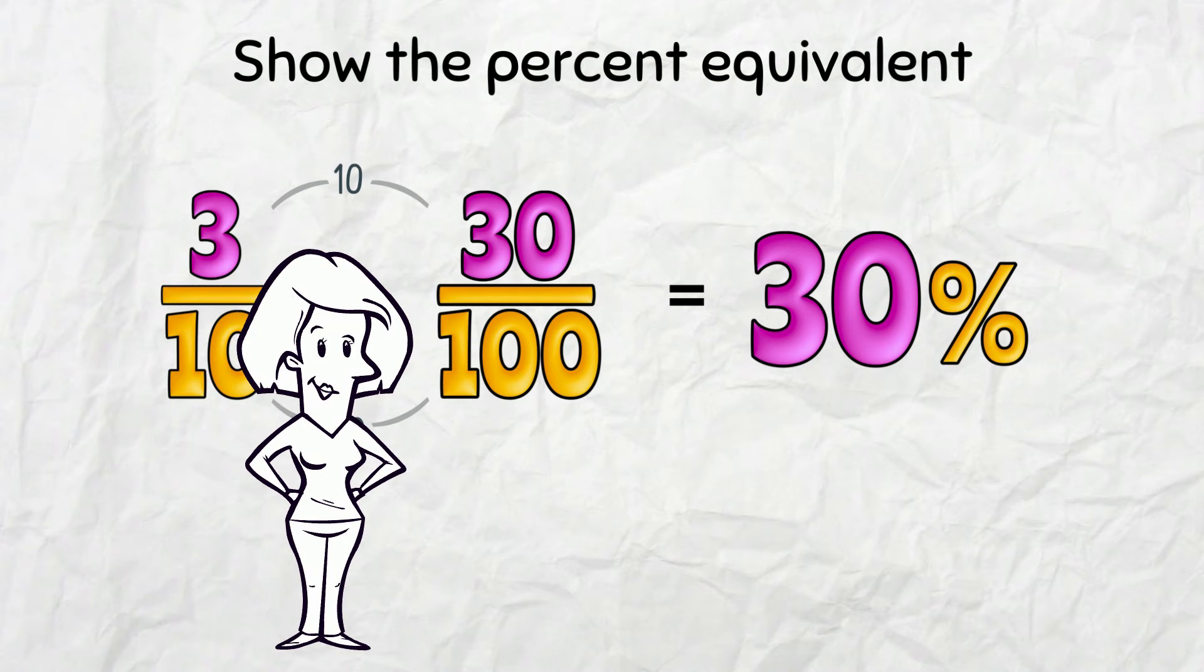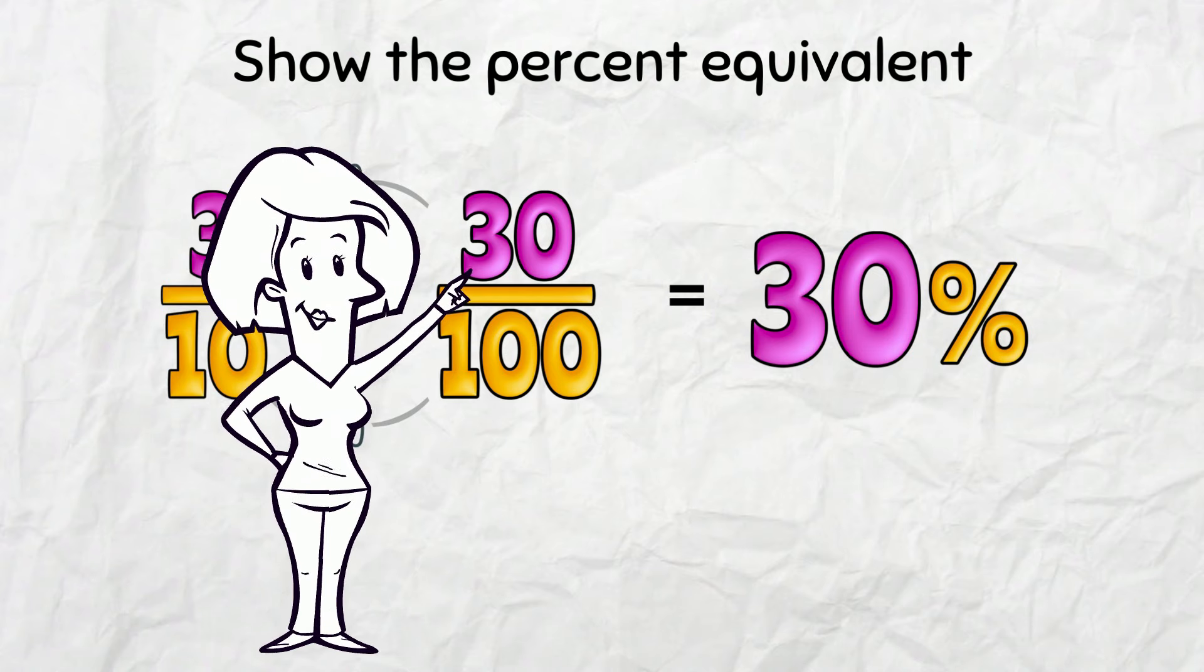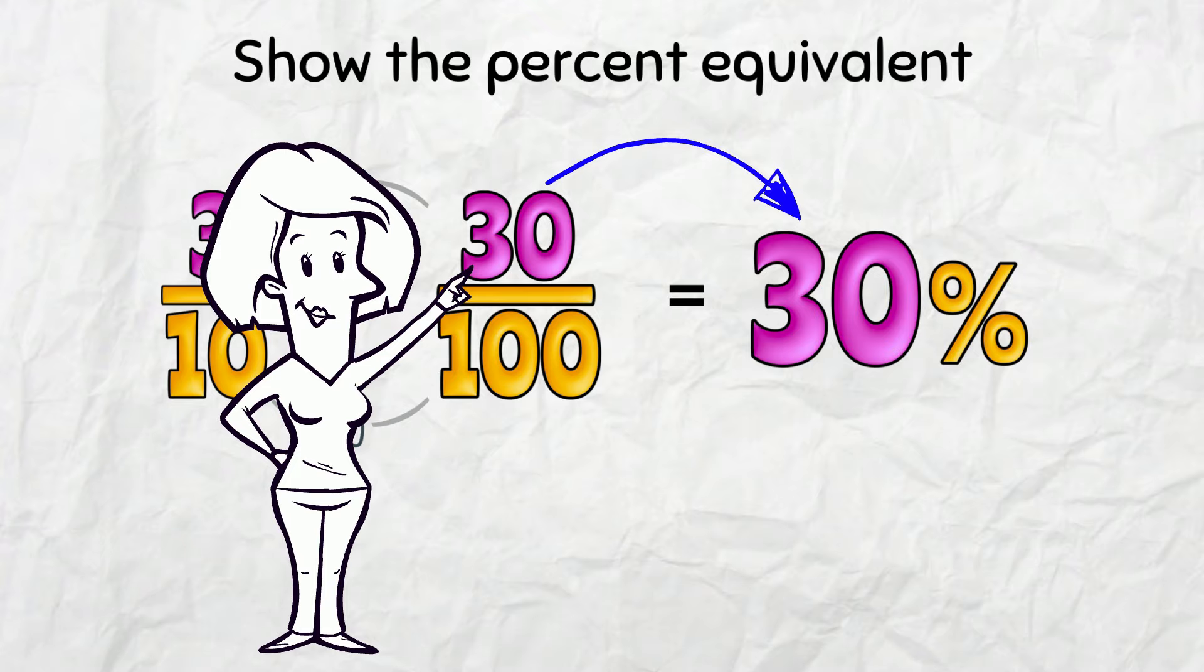If I have a denominator of 100, then the numerator is the percentage amount. Easy!